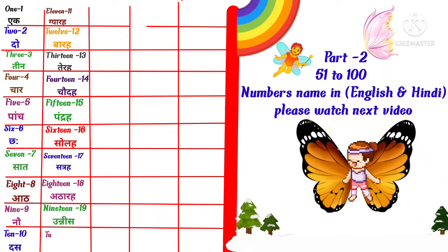T-W-E-N-T-Y, 20 means twenty. T-W-E-N-T-Y O-N-E, 21 means twenty-one.